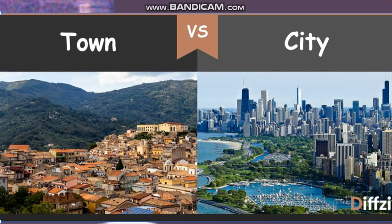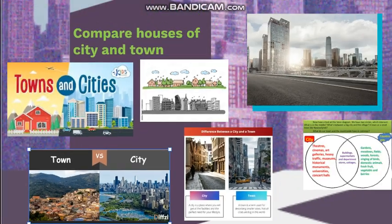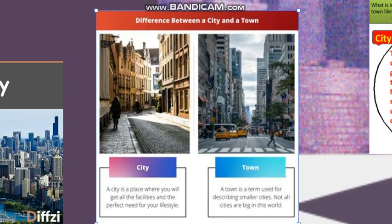We can see a city and a town, and the difference between them is obvious. In a city, we can see tall buildings, shores, and a lot of buildings that include offices, companies, cinemas, and a lot of things — because we live in a city and we observe all of these buildings. In a town, we don't see high buildings. We can see shorter buildings and a lot of trees. There are more trees in a town than in a city. A city is a place where you get all the facilities for your lifestyle. A town is a term used for describing smaller cities.